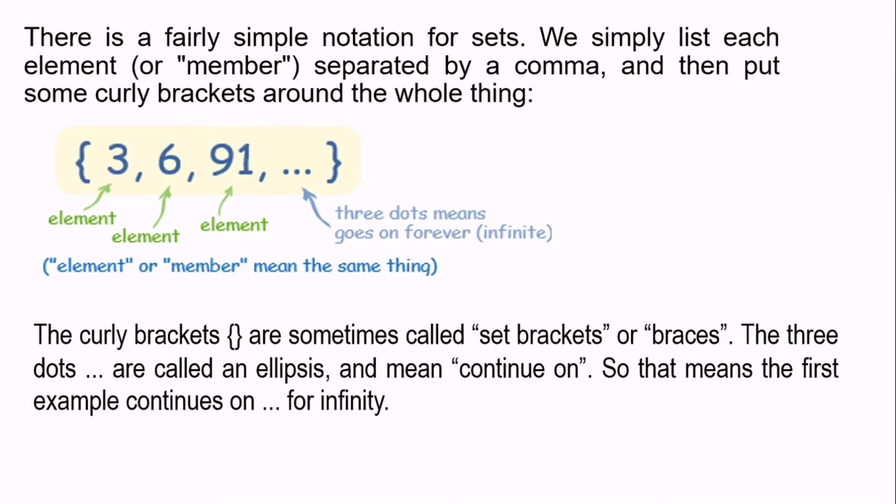Now, there is fairly simple notation for sets. We simply list each element or member, separated by a comma, and then put some curly brackets around the whole thing. The elements inside are what we call the elements or members of the set, and it should have braces or brackets. The elements here are 3, 6, and 91. The three dots or ellipsis means goes on forever or infinite.